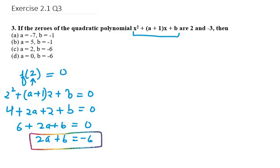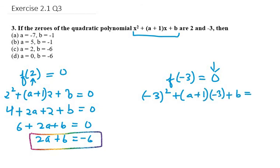Now the next one we have is f(-3) = 0. Why I am taking it equal to 0 is because it is a zero of the quadratic polynomial. So it will be (-3)² + (a+1)(-3) + b = 0.